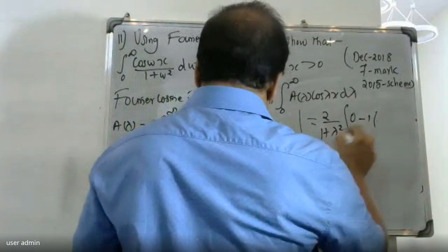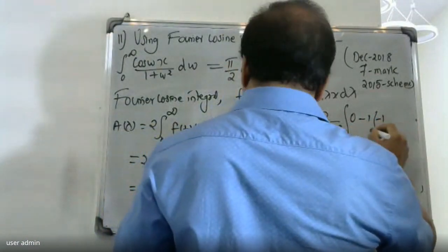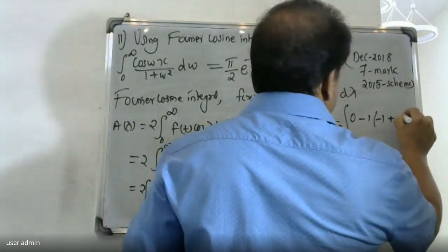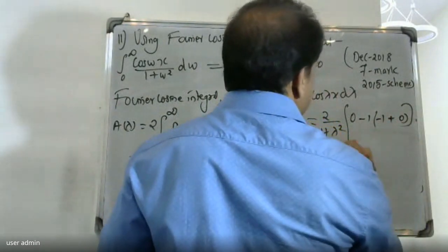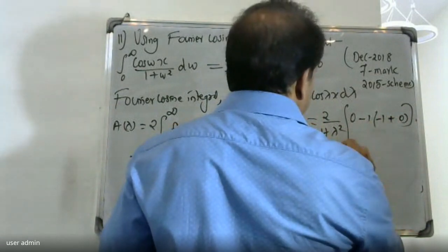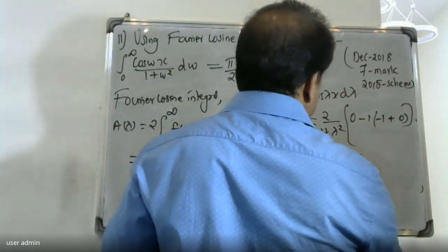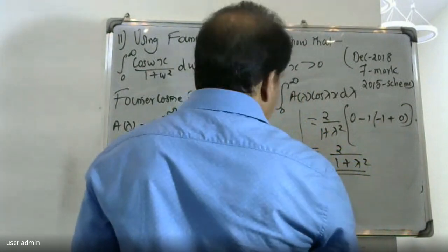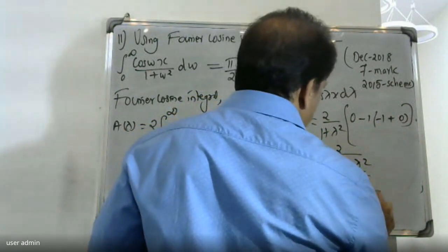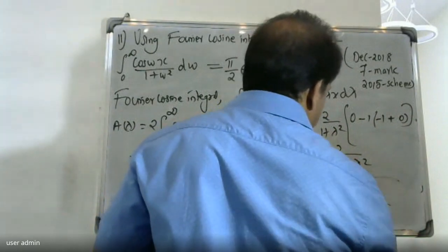Therefore, A(λ) = 2 divided by (1 + λ²). This is the A(λ) value for the Fourier cosine integral.